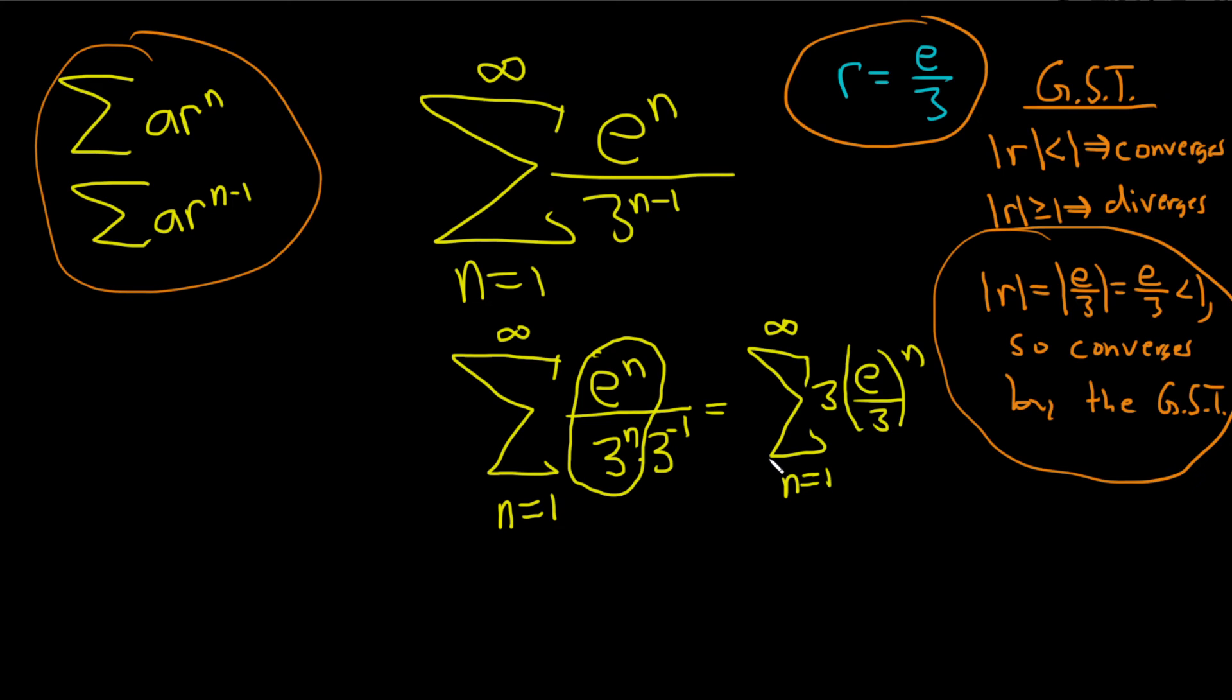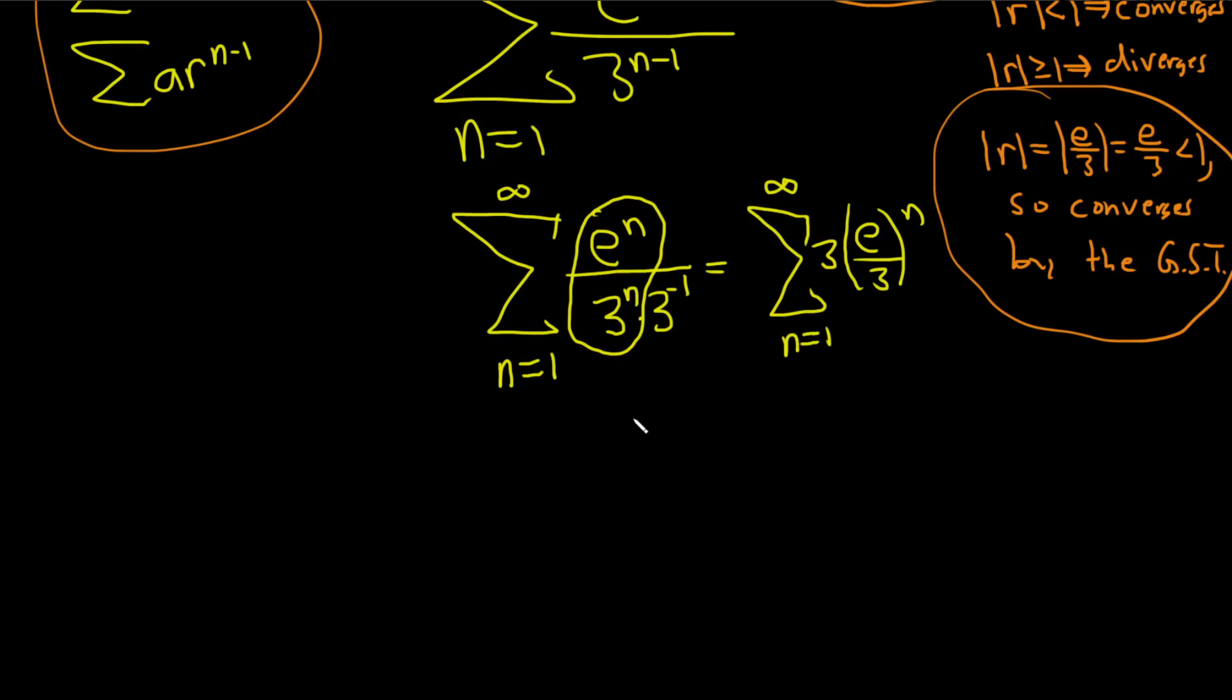Now we have to find the sum because it converges. To find the sum it's actually pretty easy. All you do is take whatever number is here and plug it in. That goes up top, so we have 3 times e over 3 to the 1, and then you divide.